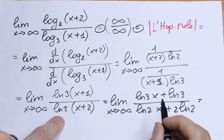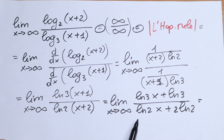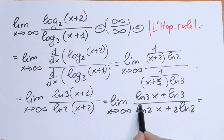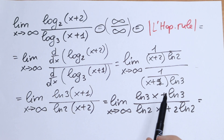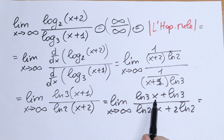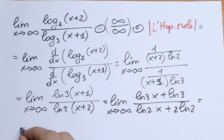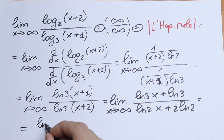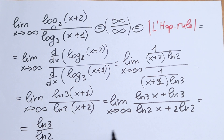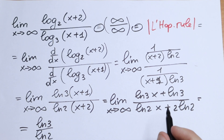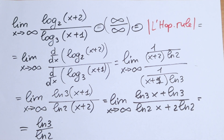Take a look — if we plug in infinity right here, the dominating power is x. So the limit equals natural log 3 over natural log 2, because of the dominating power of x. And this is our answer: the limit equals natural log 3 all over natural log 2.